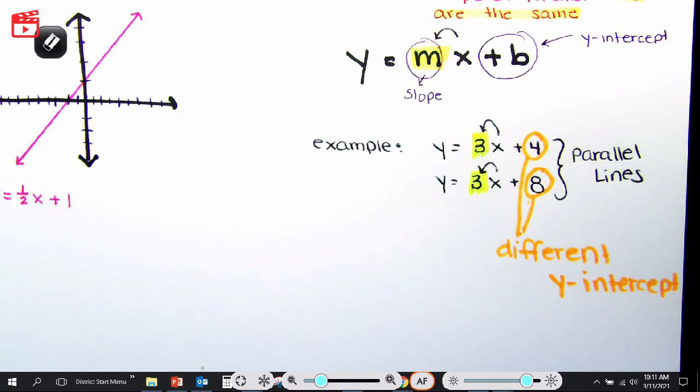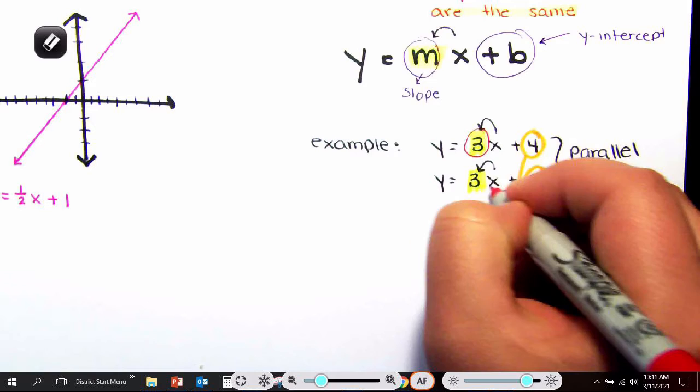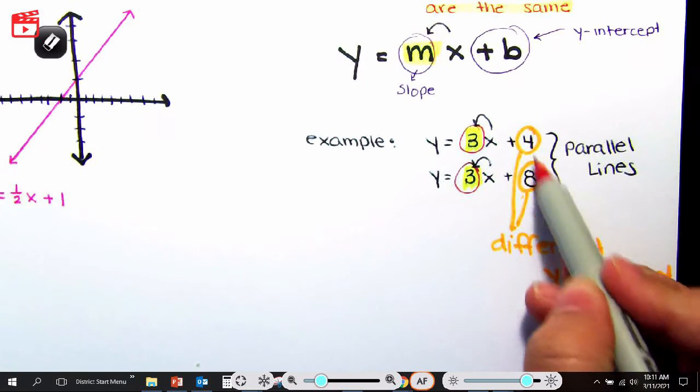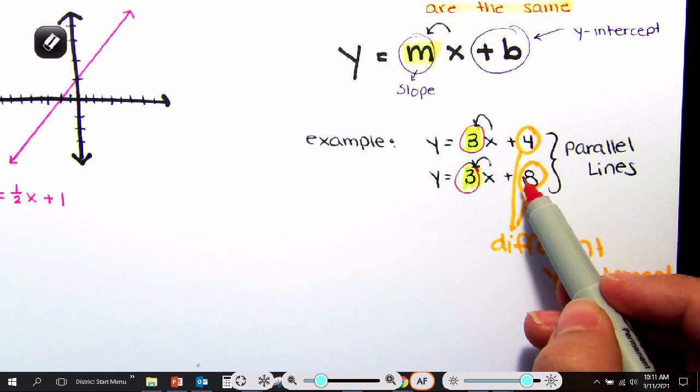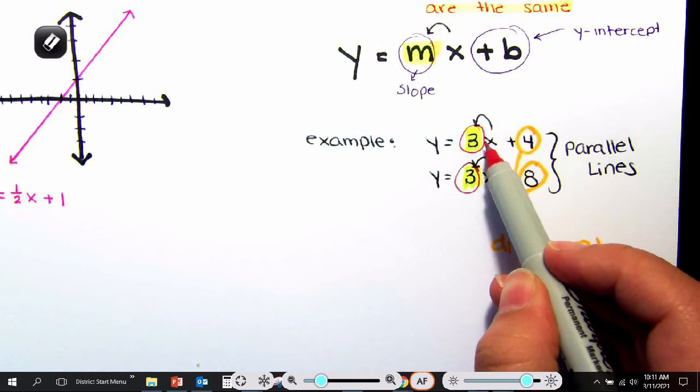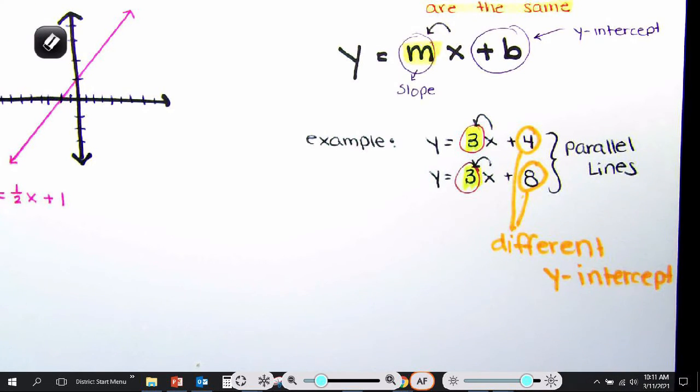However, we want the lines never to touch, never to cross or intersect. So you want the slope to be the same. So you want the number in front of x to be the same. And it doesn't matter what these two numbers are. So if you see two numbers that are the same in front of x, that means your lines are parallel.